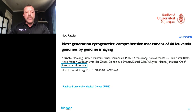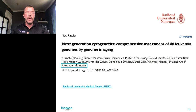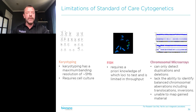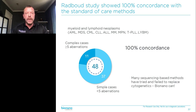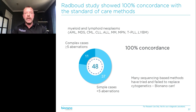Another study that just came out in bioRxiv is from a team at the Radboud University in Nijmegen in the Netherlands, who have always been at the forefront of bringing new technology into the clinic. They compared our genome imaging technology with standard cytogenetics — karyotyping, FISH, which uses specific probes to specific genes and has a limited field of view, and chromosomal microarray that can only detect duplications and deletions but cannot find the exact structure or balanced events. In this study, they compared BioNano against all of these methods combined in 48 samples and amazingly found 100% concordance — meaning in all 48 samples, BioNano picked up all clinically reported structural variants from karyotype, FISH, and array combined.